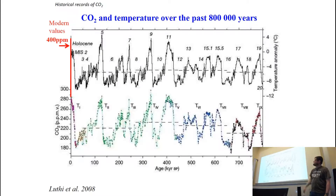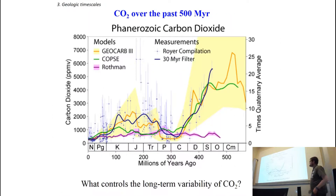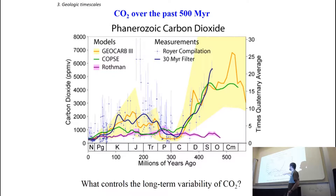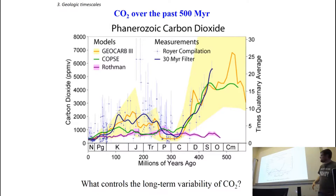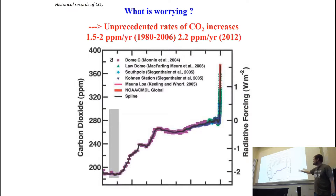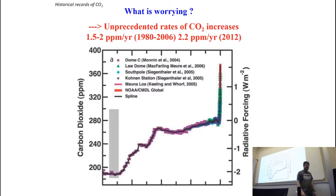The top one is a proxy for temperature. Looking over even longer timescales, you can see that there are potentially places in the past — if you go back to maybe the Cretaceous, it was more CO2 in the atmosphere, but then again, much warmer as well. But we're really going to be focusing in on this younger portion of the record.